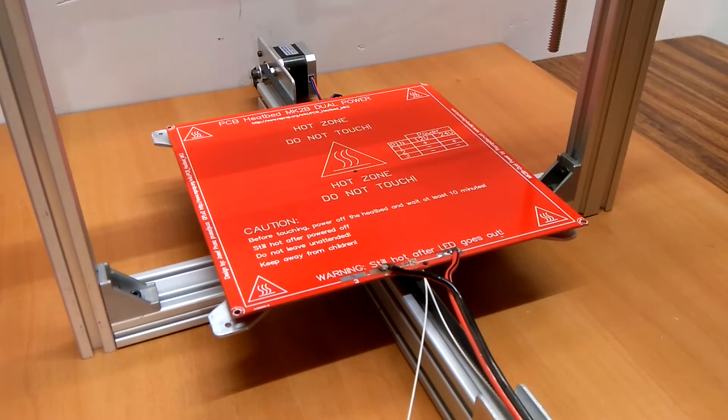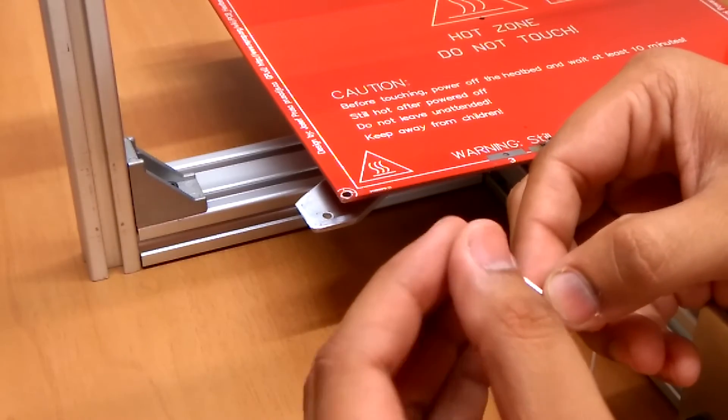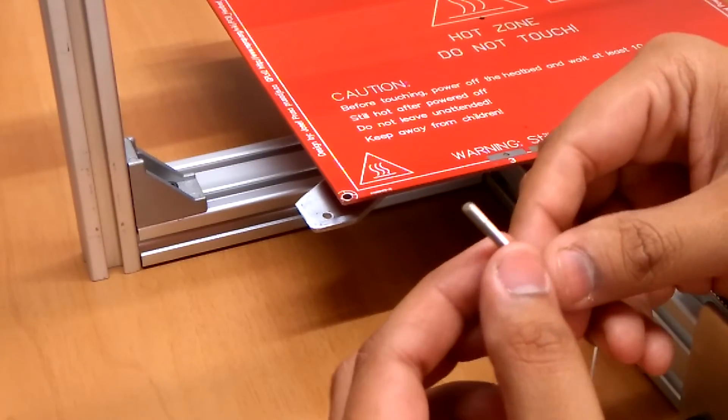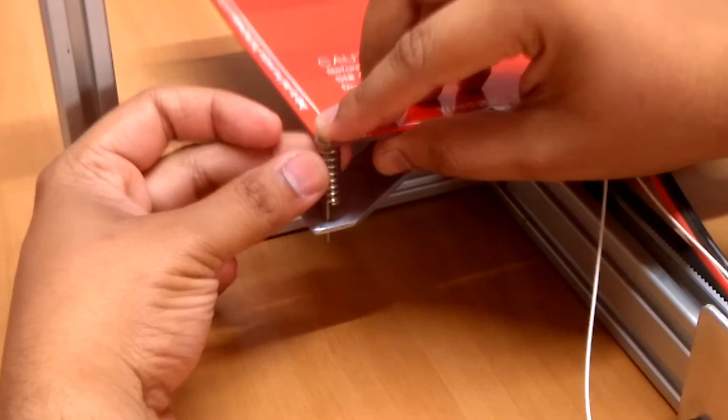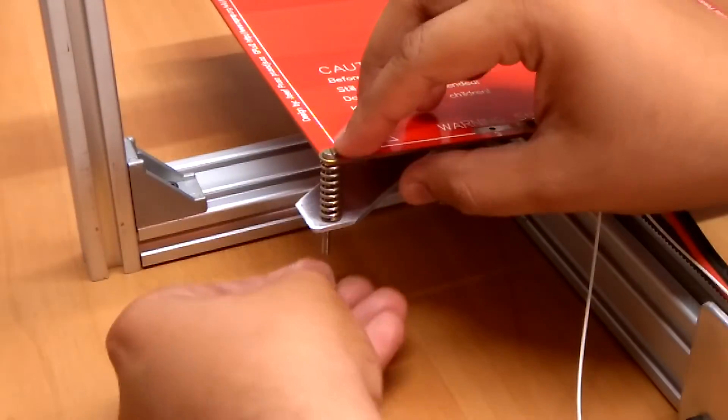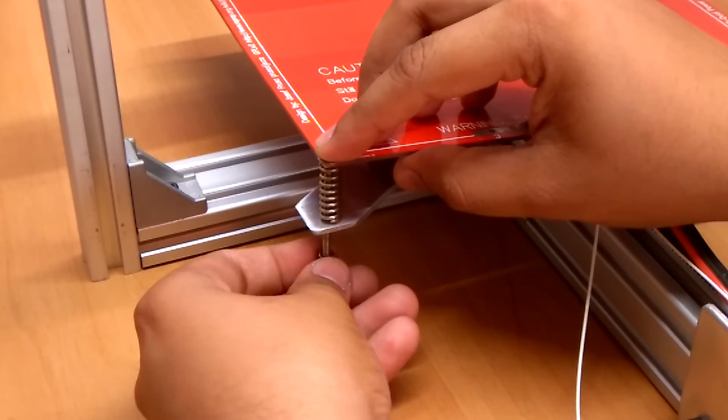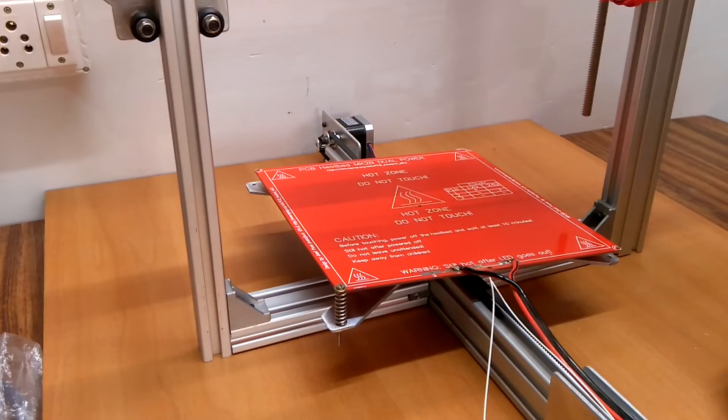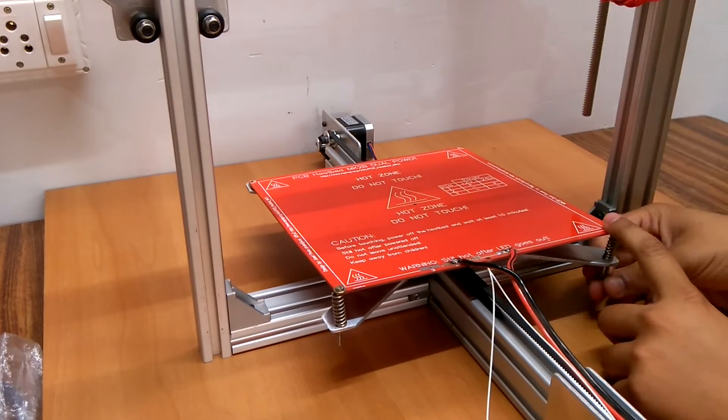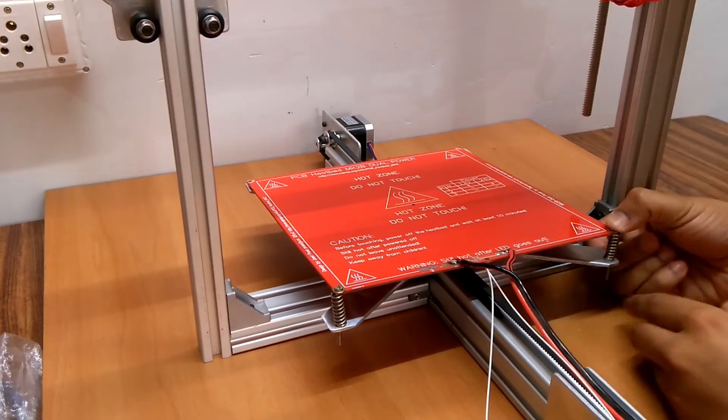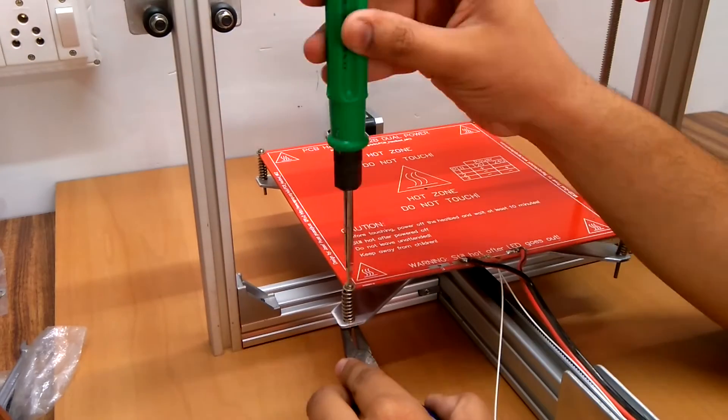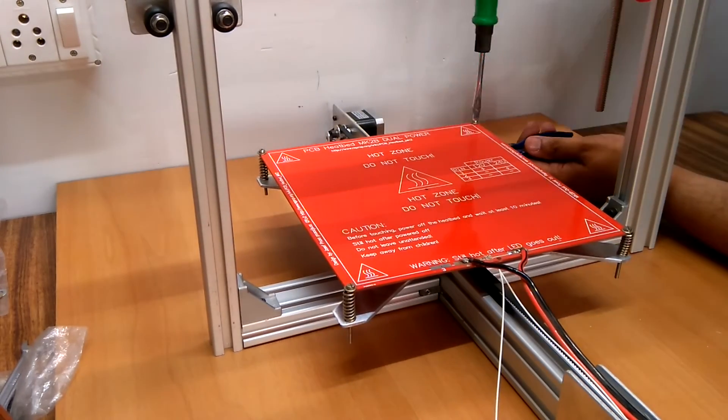I used a 3 mm wide 40 millimeter long screw, first placed the washer, passed it through the heated bed, placed the 20 millimeter spring, passed it through the mount plate and tightened it with a nut. I did the same procedure for the remaining three sides of the heated bed and then tightened all sides.